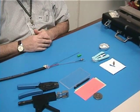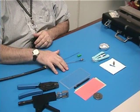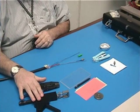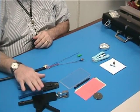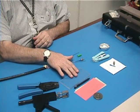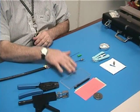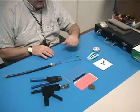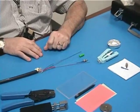But first let's look at the tools. We have the hand tool and the crimp tool for the impact mount. We have the polishing tool for polishing the fiber and we have the stripper to strip the buffer out of the cable, and of course the connector.